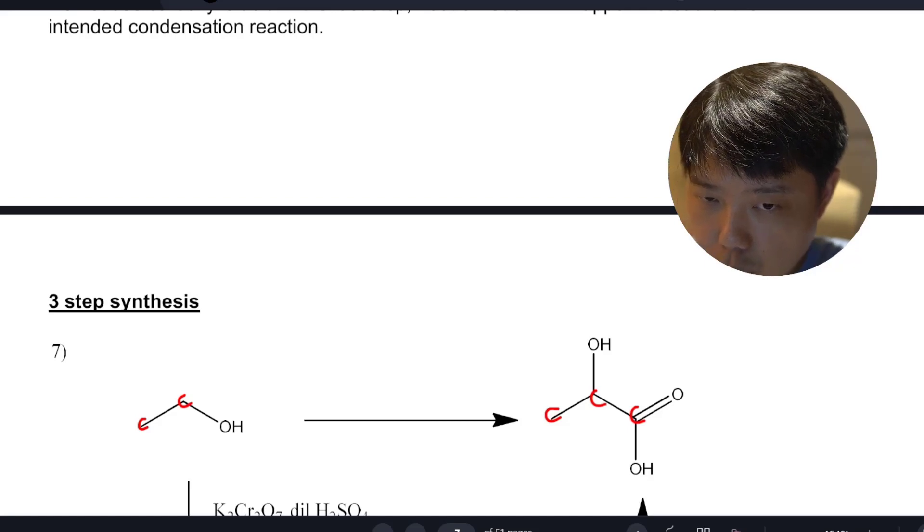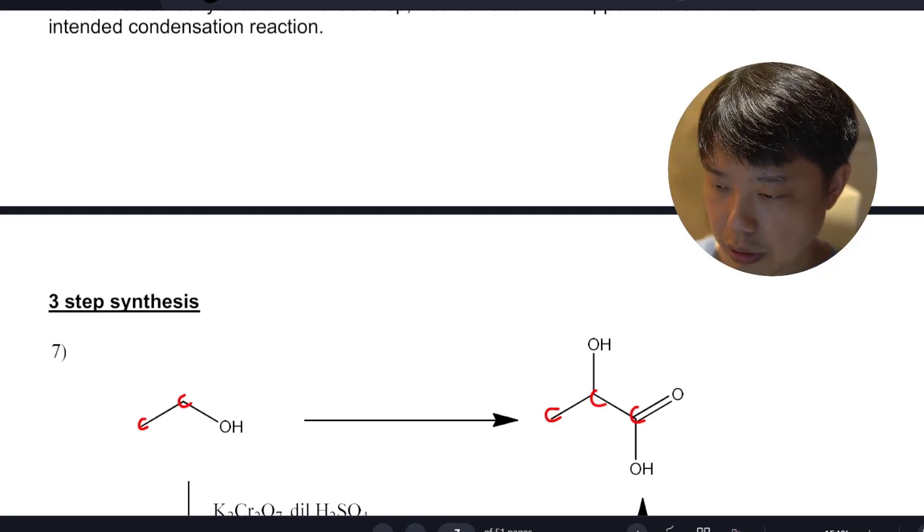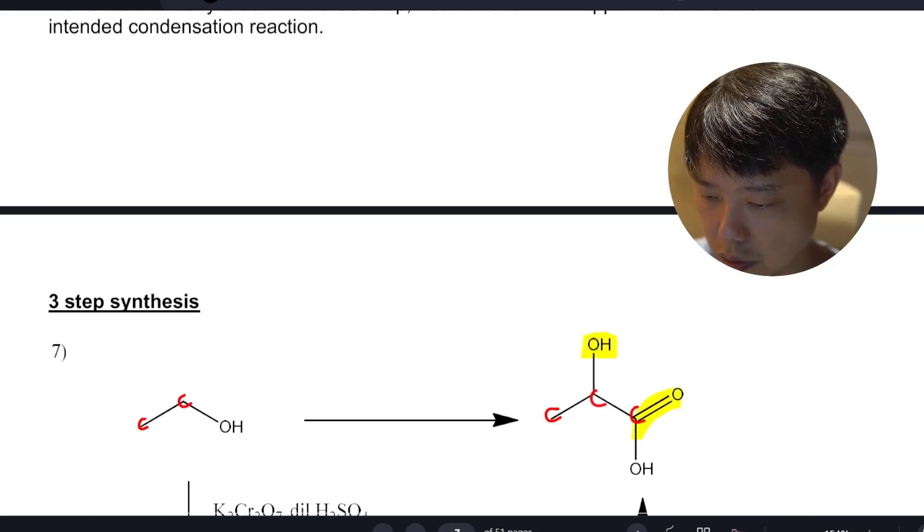So the easiest way to do that, you can use KCN. But then we realized that the number of functional groups also went up. So there's now two functional groups which are adjacent to each other.